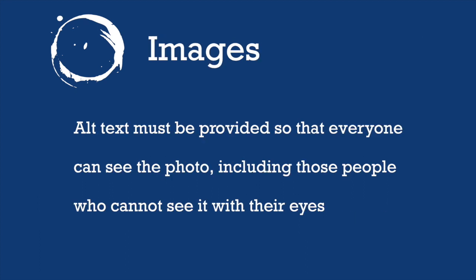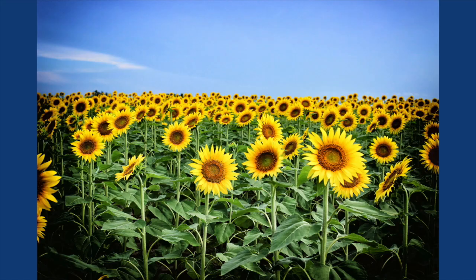The first element we will discuss is images. If you have an image on the page, ALT or alternative text must be provided so that everyone can access the photo, including those people who cannot see it with their eyes. For instance, a blind person will not see anything if an image pops up on the screen. But if we provide alternative text, they can understand what is happening on the screen. The alternative text might read: a large, never-ending field of bright yellow sunflowers with green foliage and a blue sky.